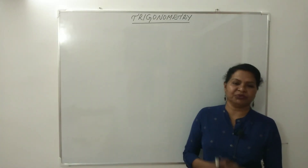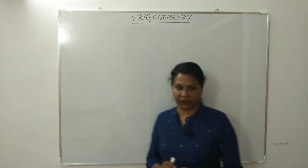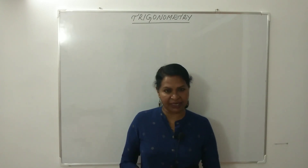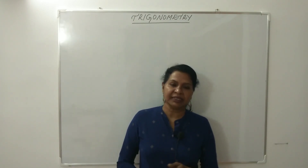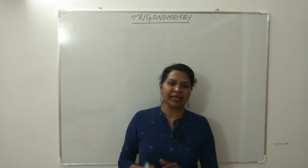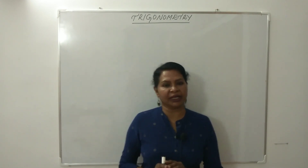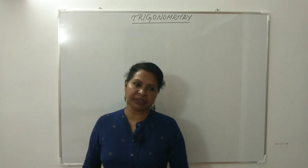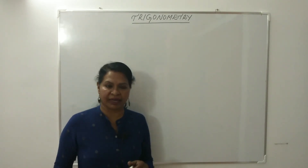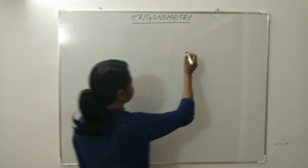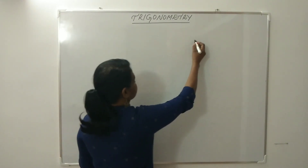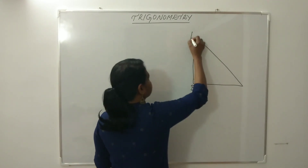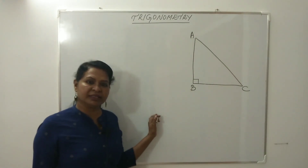In this chapter, first we have to learn some trigonometric ratios. Trigonometric ratios means the ratio of sides of a right triangle with respect to its acute angles. Let us first consider a right triangle — triangle ABC — with the right angle at B. A and C are its acute angles.